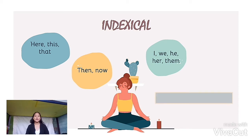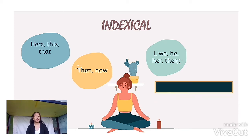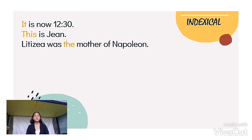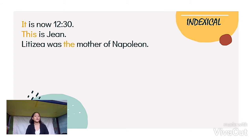So this is called diactic reference. As you can see in these examples, the yellow-colored words are diactic expressions, or indexical, such as it, this, and the.